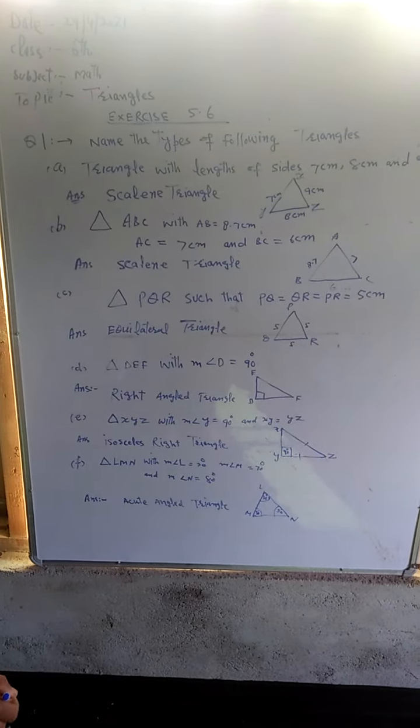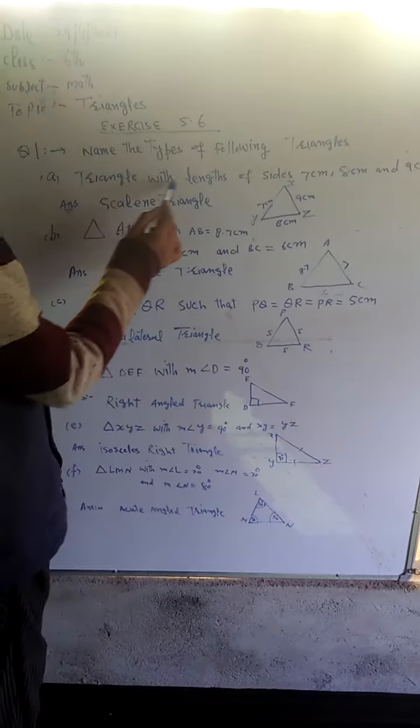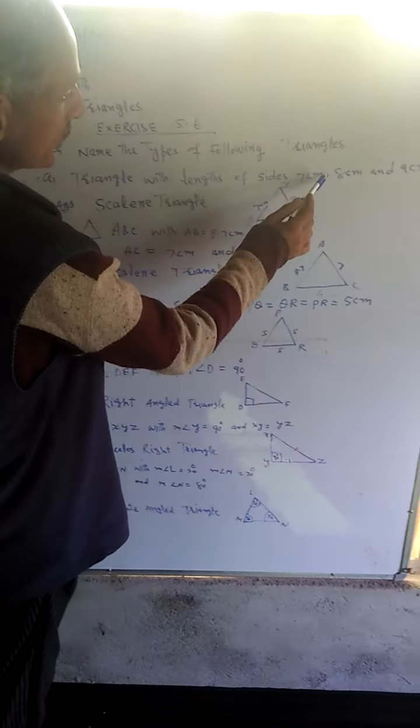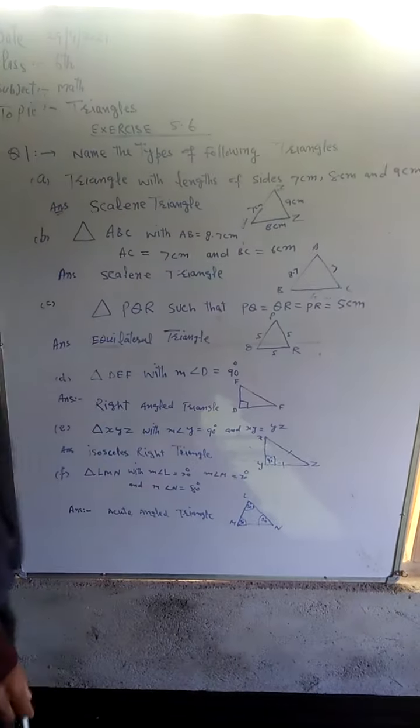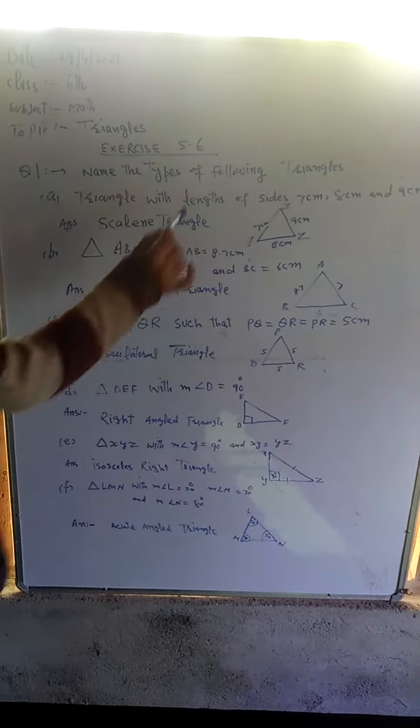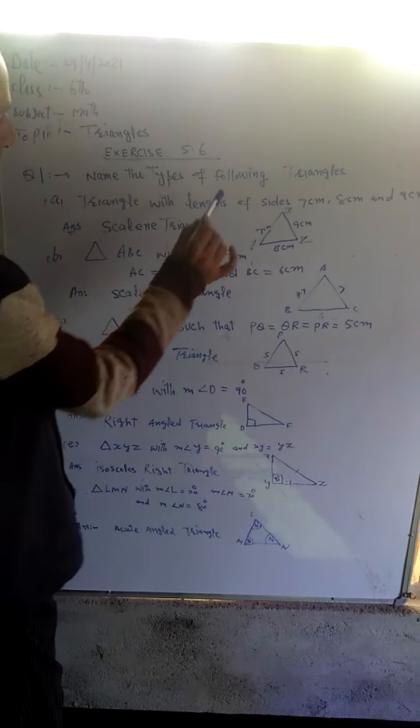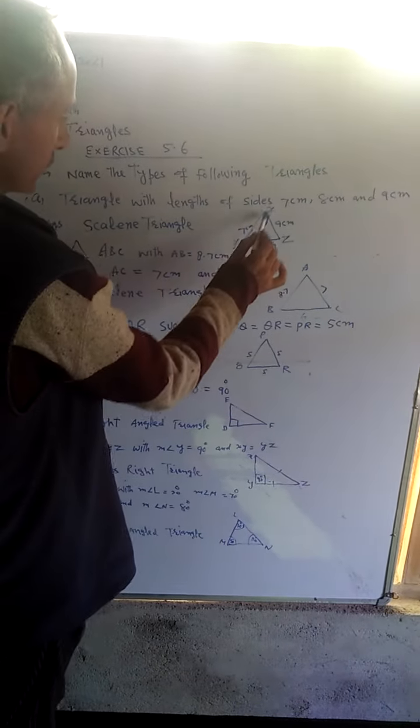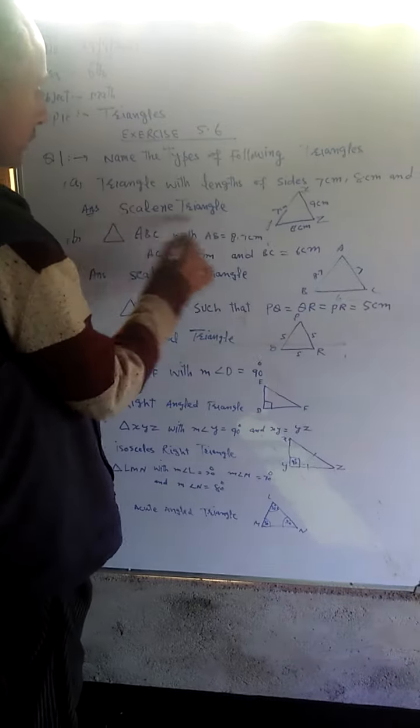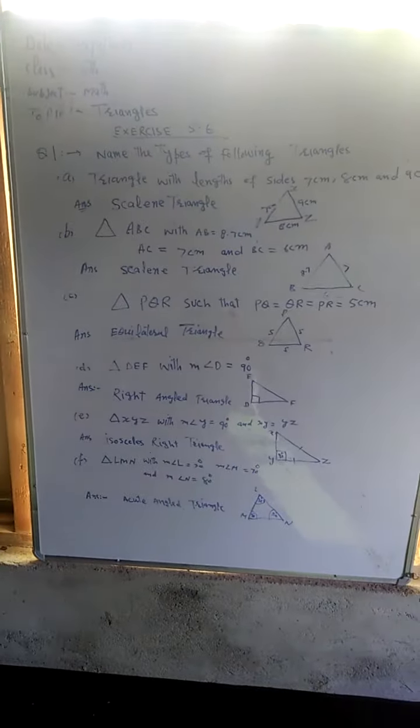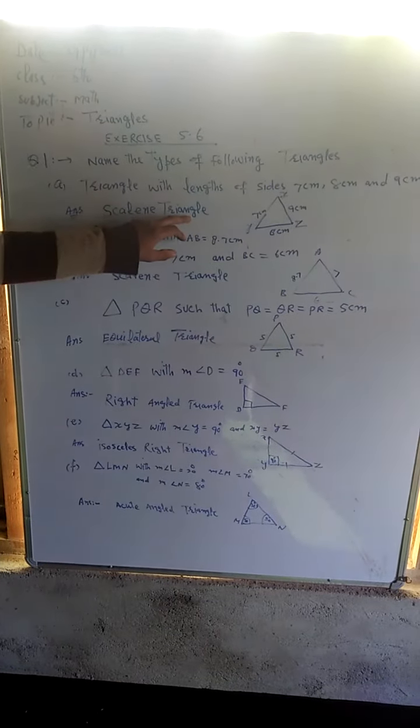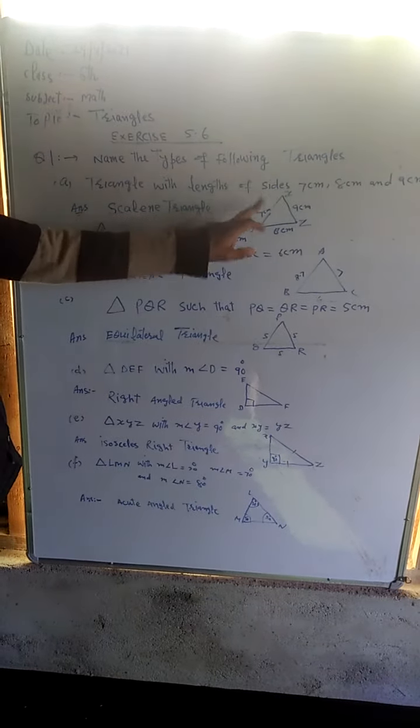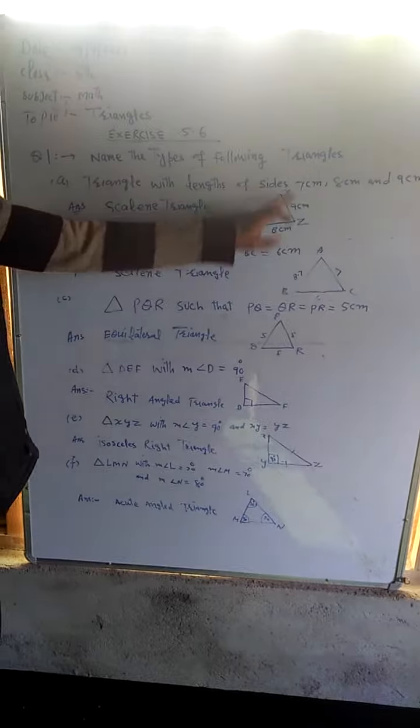First, a triangle with sides of length 7 cm, 8 cm, and 9 cm.